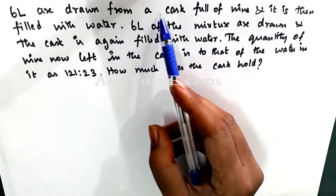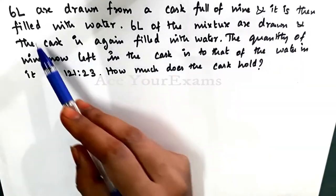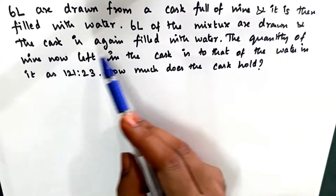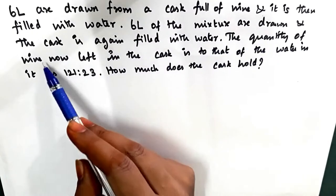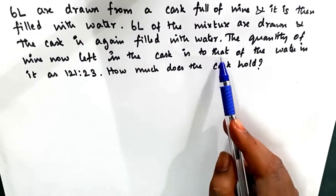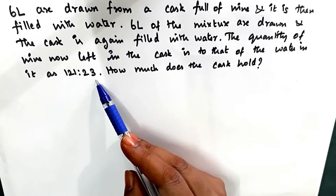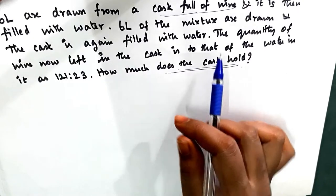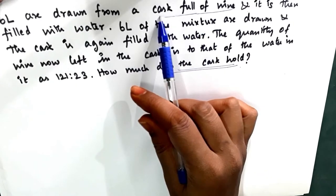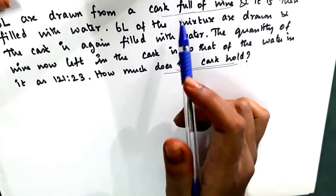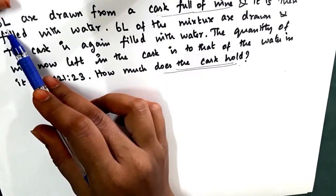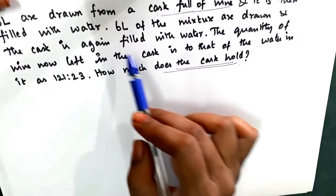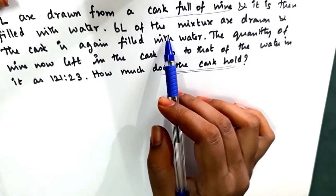6 liters are drawn from a cask full of wine and it is then filled with water. 6 liters of the mixture are drawn and the cask is again filled with water. The quantity of wine now left in the cask to that of the water is 121 to 23. How much does the cask hold? The capacity of the cask and the amount of wine initially present is the same, so initially the cask was full of wine. 6 liters are drawn and filled with water, then 6 liters from the mixture is drawn and again filled with water — the process is done two times.